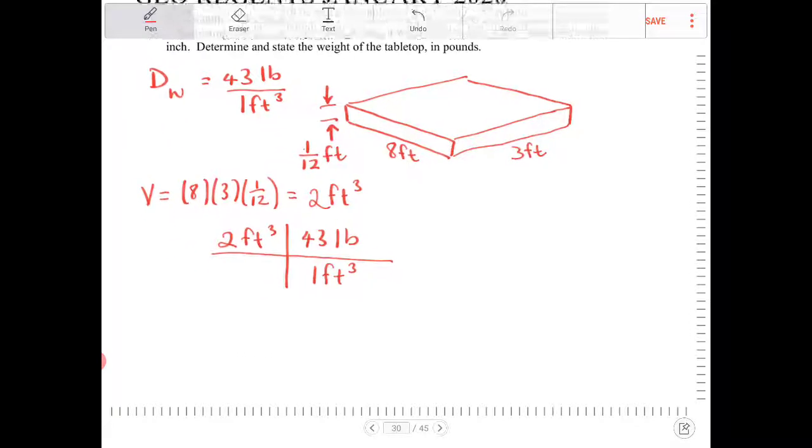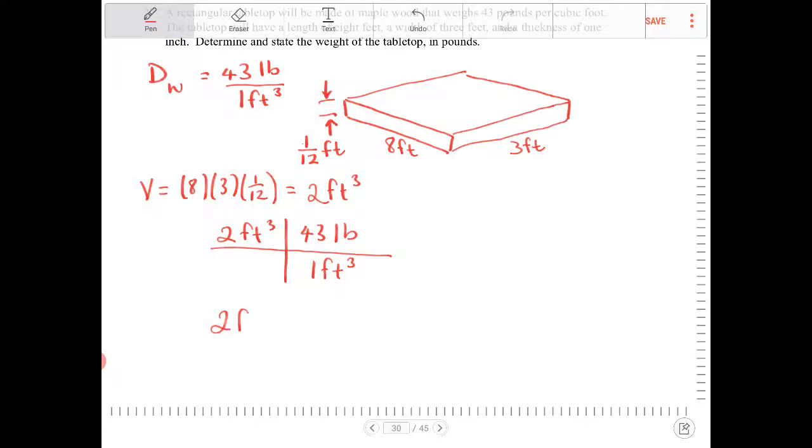Well, that's because if I were to divide, I will end up with something like this. 2 feet cubed, 43 pounds goes on the bottom, and 1 foot cubed goes on the top then. And this wouldn't make any sense because if I were to multiply this across and then divide, I'll end up with feet to the sixth power divided by pounds, which doesn't make any sense.